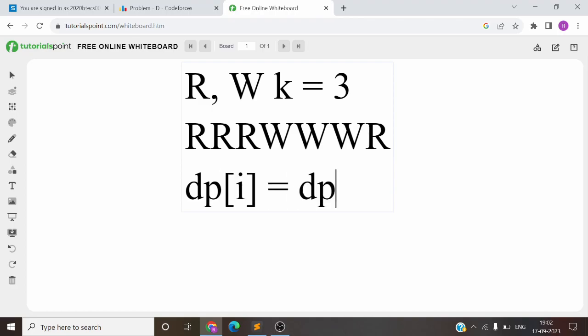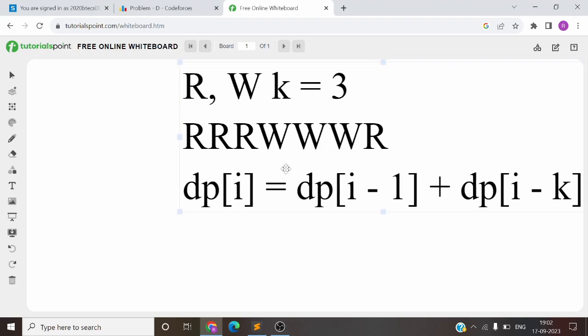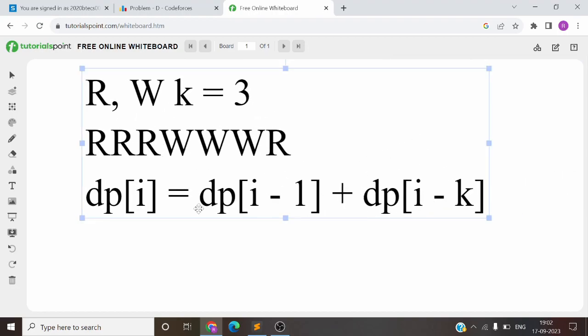Or we will add W. So the DP is equal to my left state plus if the length is greater than or equal to k, then we can take the group of k. So our DP is equal to DP of i-1 plus DP of i-k. Now the state is our state.